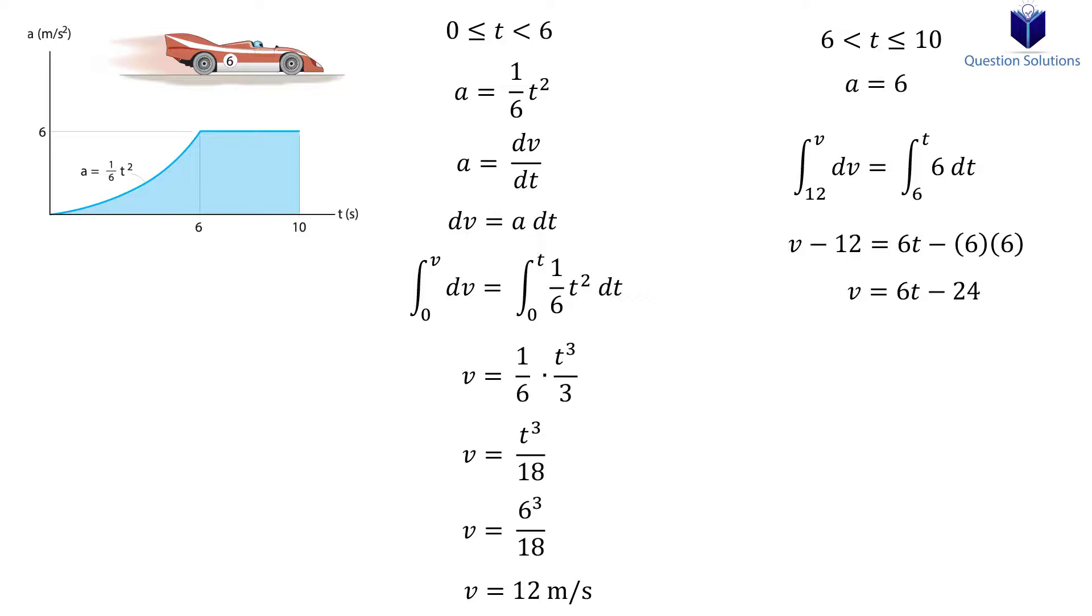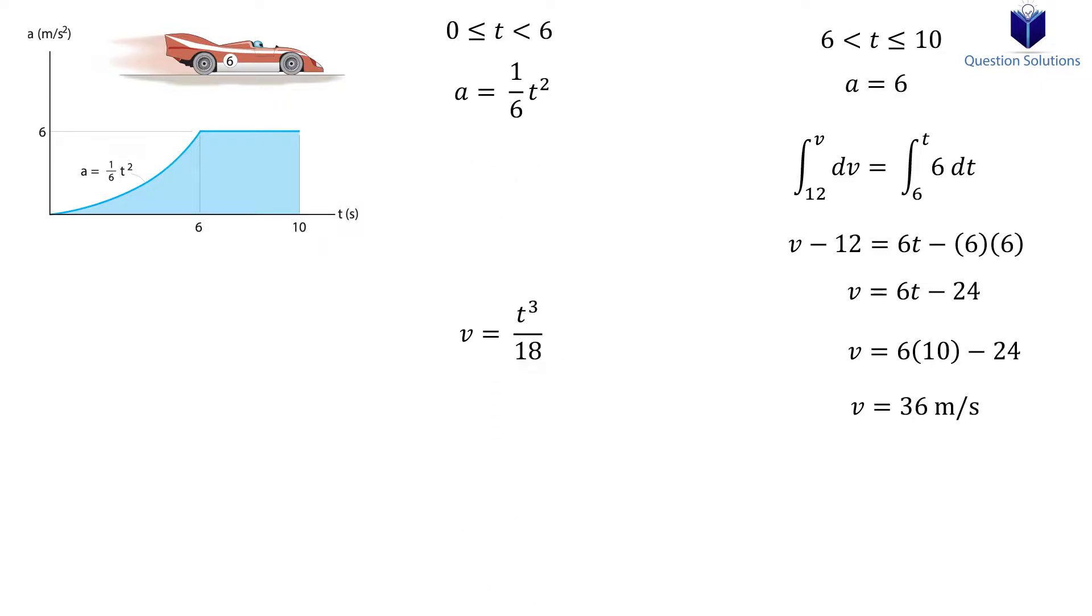To make drawing our graph easier, let's figure out the velocity of the car at 10 seconds. Substituting 10 seconds into this equation gives us 36 meters per second. The graph looks like this.